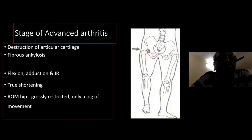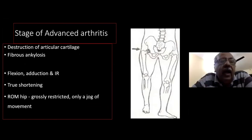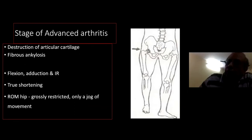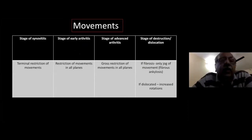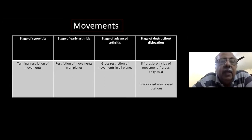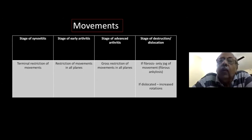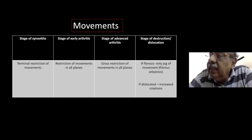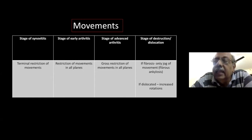In advanced arthritis, more articular cartilage is destroyed, leading to fibrous ankylosis. There is flexion-adduction-internal rotation deformity, true shortening, and grossly restricted movement — only a jog of movement is present. In summary: synovitis gives terminal restriction; early arthritis gives restriction in all planes; advanced arthritis and fibrous ankylosis give only a jog of movement; and if the hip is dislocating, the range of movement may actually increase.